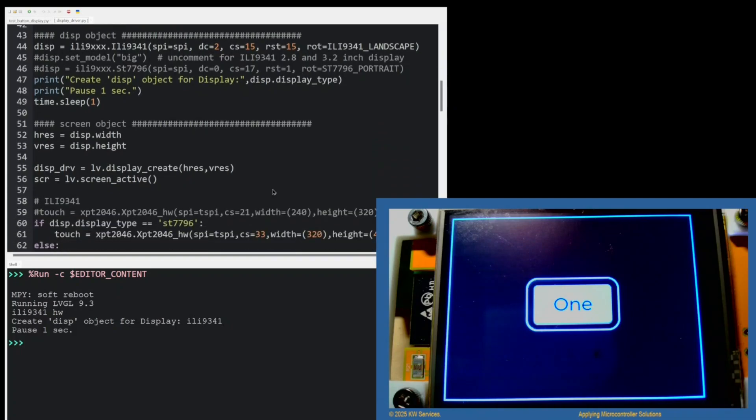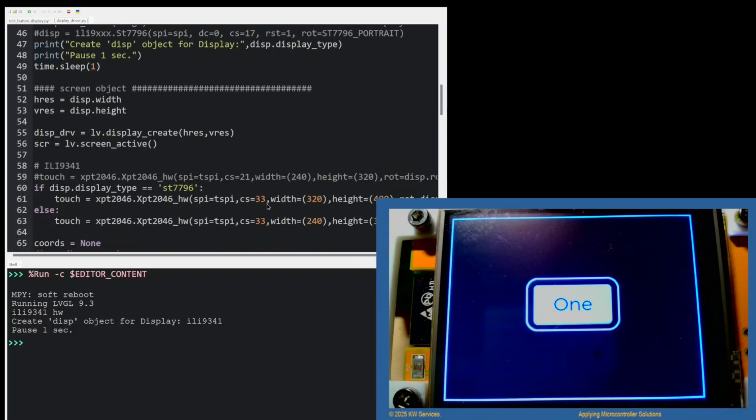Finally, on the touch, the CS pin is 33. Now, for the ESP32 device, you would make the pin changes as we discussed on the previous slides.